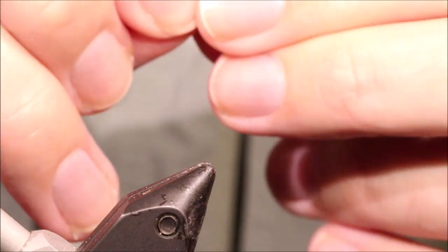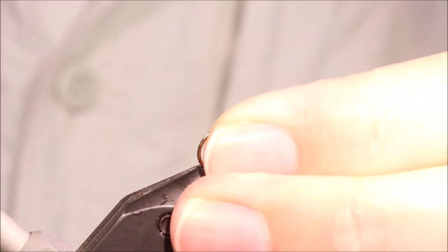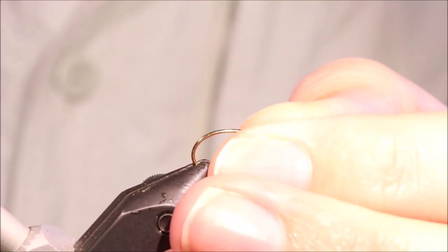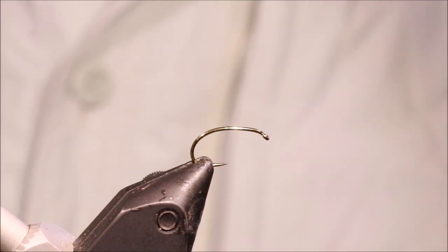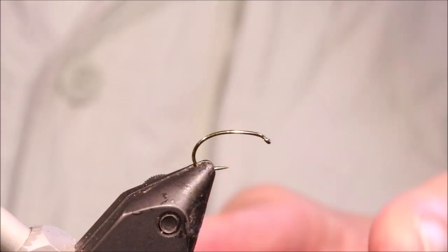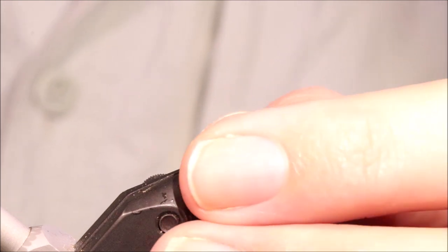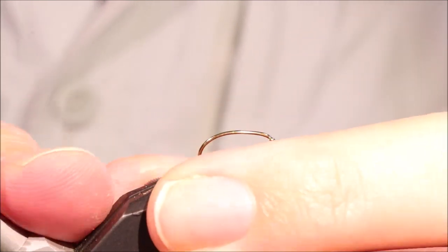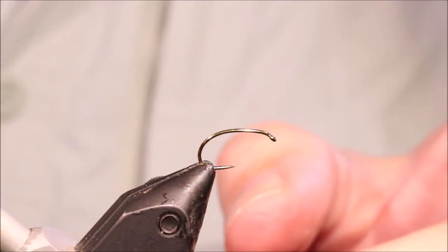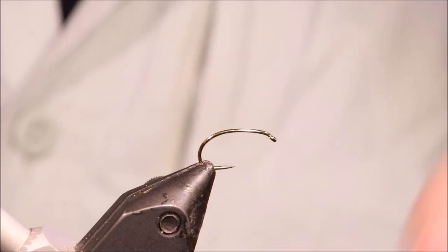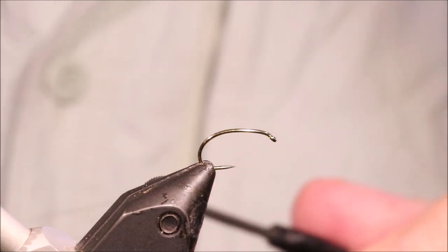I've got my hook in my vise, this is a TMCO 2487 Barbless, and this is a 12. The fly that I had in the vise was a 14, but I'm tying a 12 so you can see it a bit better.